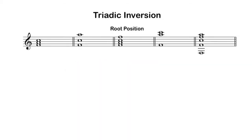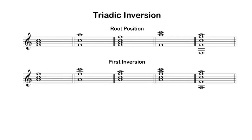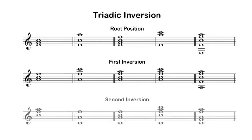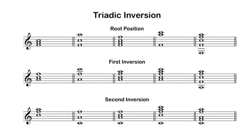A triad is said to be in root position when the chord root is the lowest pitch. A triad is in first inversion if the chord third is the lowest pitch. A triad is in second inversion if the chord fifth is the lowest pitch.